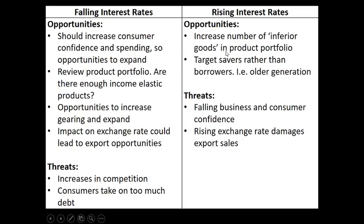Rising interest rates bring falling consumer confidence, falling spending, and falling disposable income. Thinking back to income elasticity of demand, businesses need inferior goods in their portfolio — products that people switch to as their income falls — such as the Tesco economy range, as a good example.